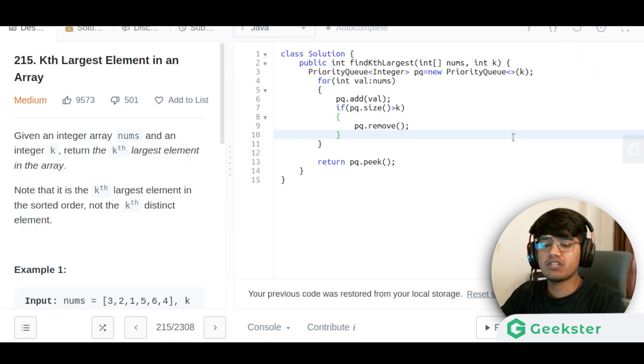Here is the code solution. It is pretty straightforward. We are creating a priority queue of integer of size k. Then we are running a for loop.